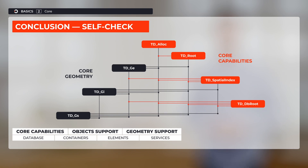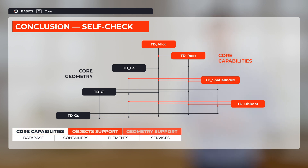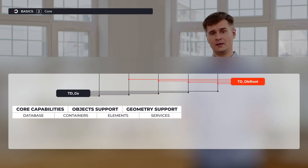As a self-check: today, on top of the terms we introduced in the previous videos, we introduce the following — core capabilities, objects and geometry support, and the dependencies between models.